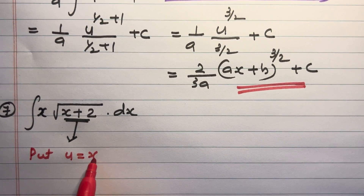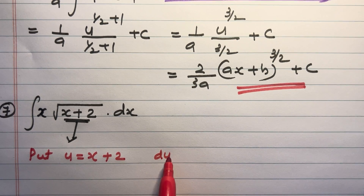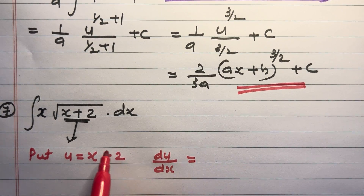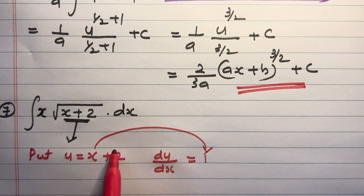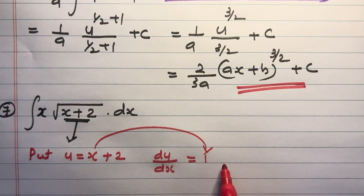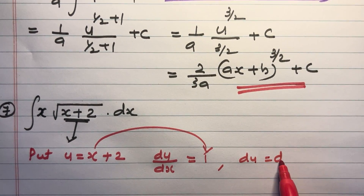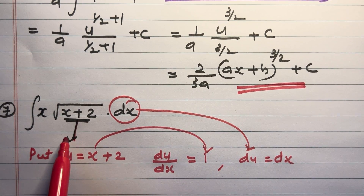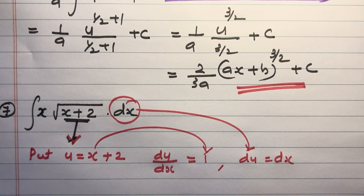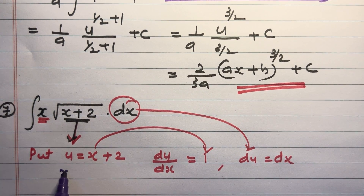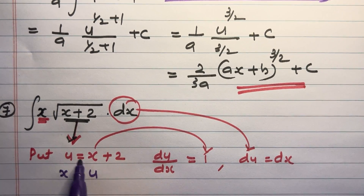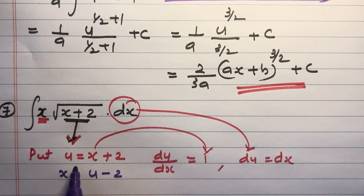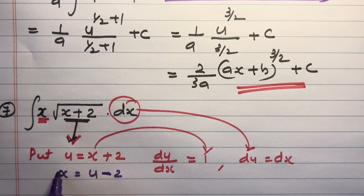Since u equals x plus 2, du divided by dx equals 1 (derivative of x is 1, derivative of 2 is 0), therefore du equals dx. Substituting, dx becomes du and x plus 2 becomes u. The value of x is obtained by rearranging: x equals u minus 2.